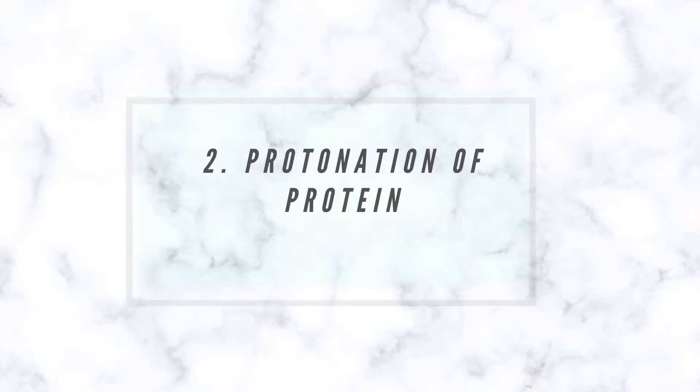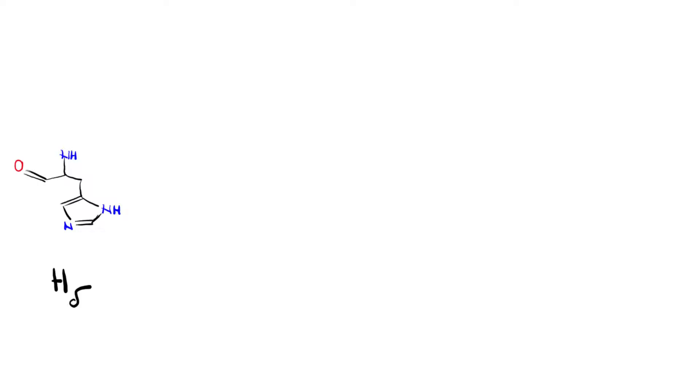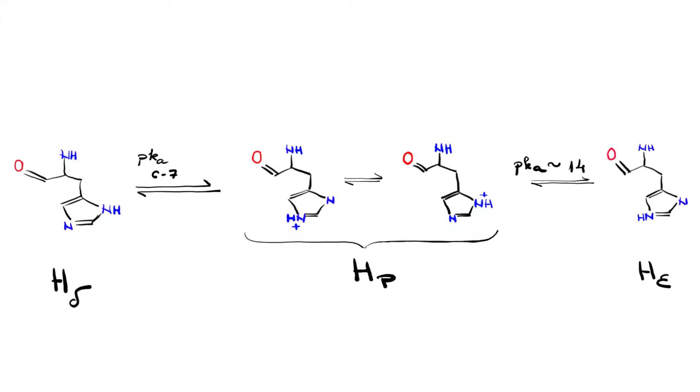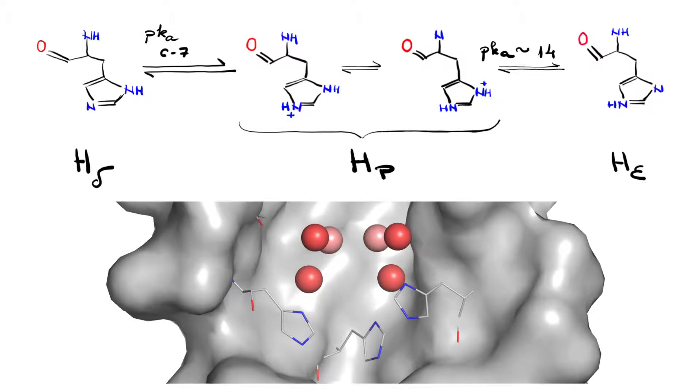The second point, but equally as important, is the protonation state of the protein amino acids. Just one example is the histidine, which can have multiple charges depending on the pKa values. And we must know that histidine is often involved in ligand interactions. So it can be either a proton donor or acceptor. So before docking, it is crucial to know its protonation state.